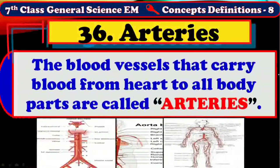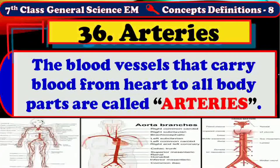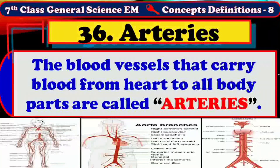The blood vessels that carry blood from the heart to all body parts are called arteries. Arteries are also known as distributing blood vessels. Generally, all arteries transport pure blood or oxygenated blood, except pulmonary arteries. Pulmonary arteries transport impure blood or deoxygenated blood to the lungs. The arteries that transport pure blood to all body parts except the lungs are called systemic arteries.